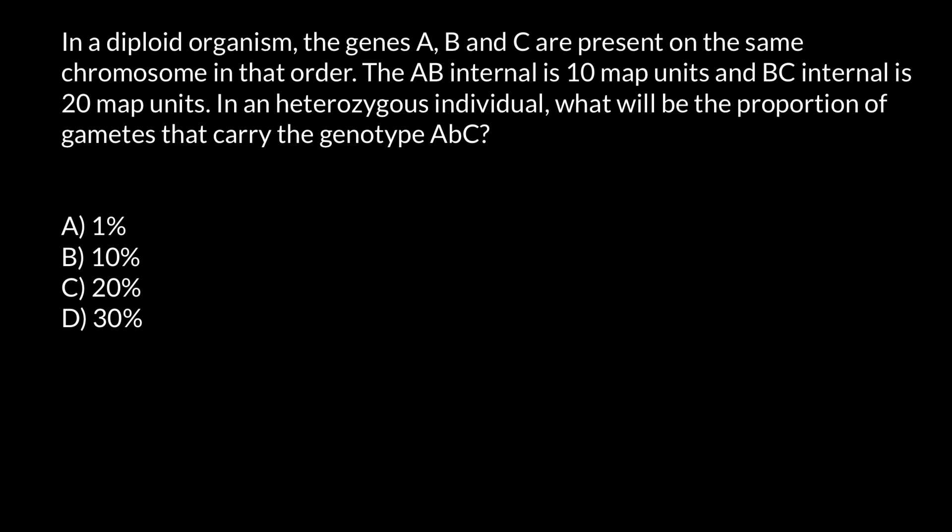Hello and welcome to Nikolai's genetics lessons. Today's problem I got from one of my subscribers. In a diploid organism, the genes A, B, and C are present on the same chromosome in that order. The AB interval is 10 map units and BC interval is 20 map units. In a heterozygous individual, what will be the proportion of gametes that carry the genotype ABC? So first of all, let me draw a picture.